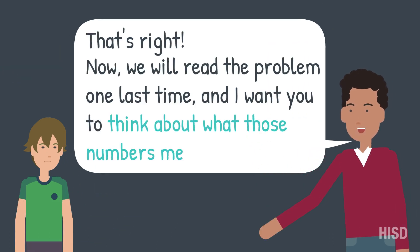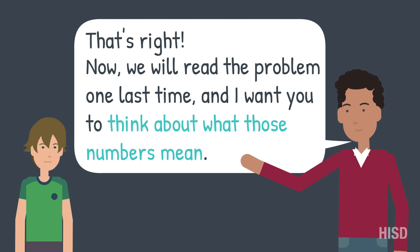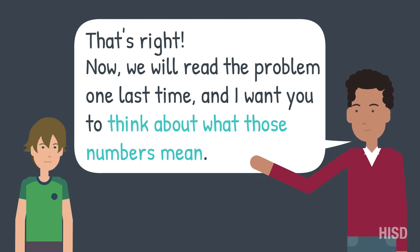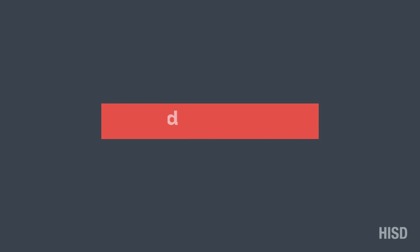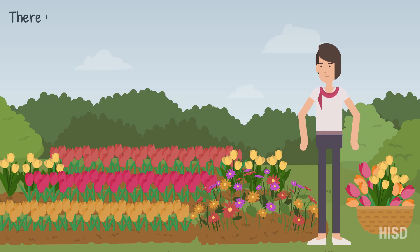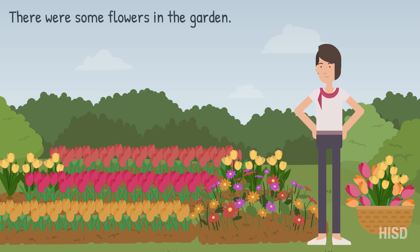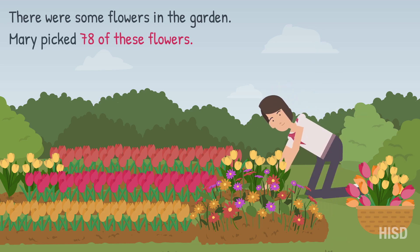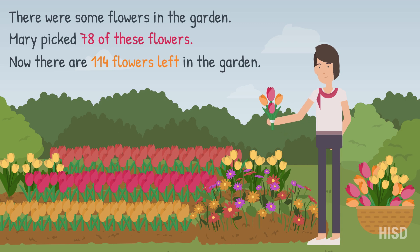Now we will read the problem one last time and I want you to think about what those numbers mean. There were some flowers in the garden. Mary picked 78 of these flowers. Now there are 114 flowers left in the garden.